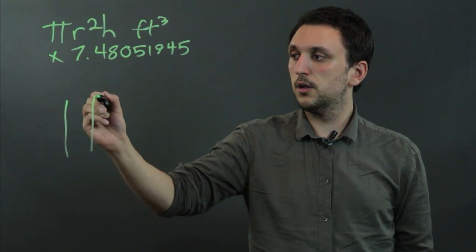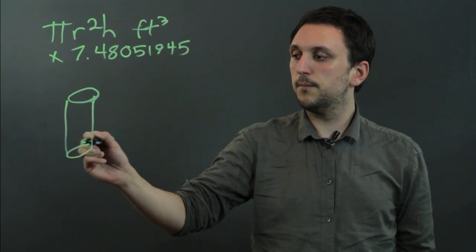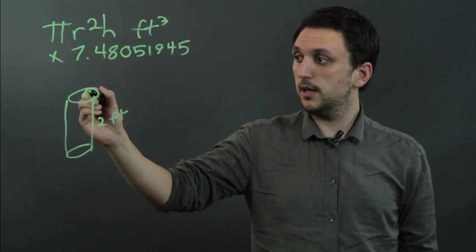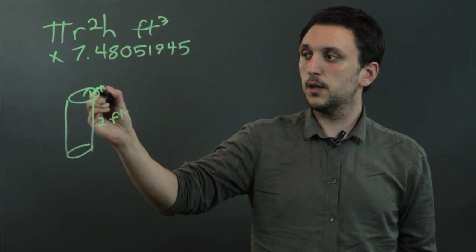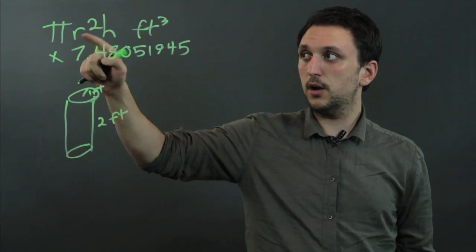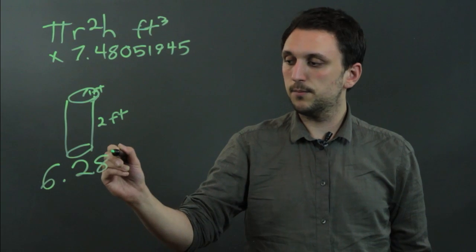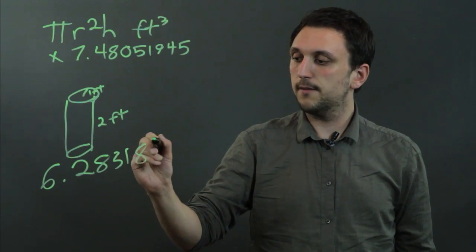So, let's say we have a cylinder, and the height is two feet, and the radius of this circle is one foot. So, we would multiply pi r squared h, and that would give us 6.283185,